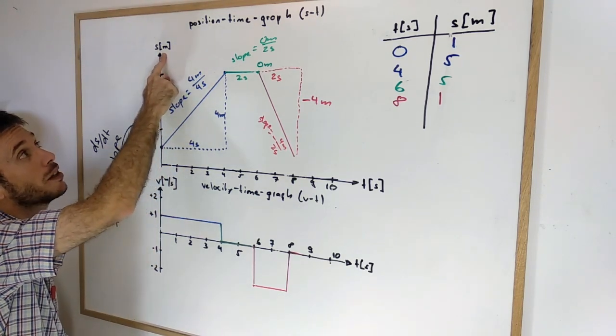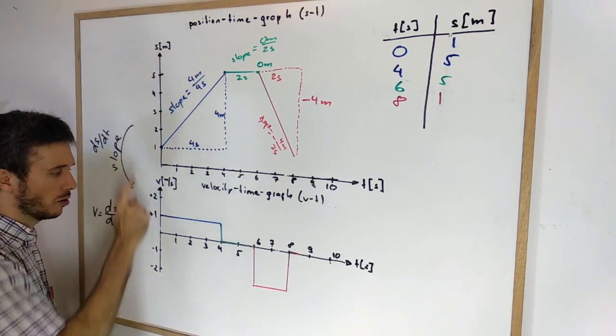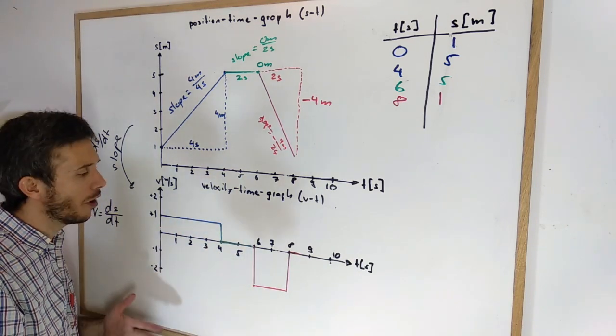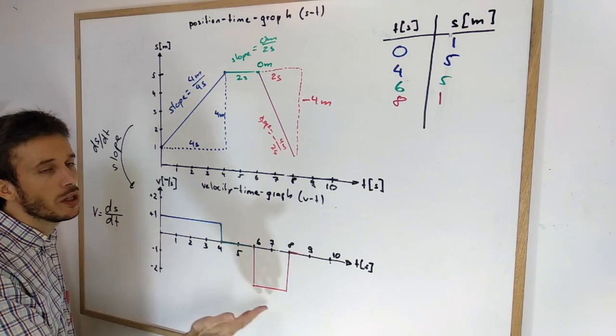Remember, for the position time graph, we have meters per second. So now at any moment in time, I'm simply going to plot how fast, or what is the velocity, of the object.